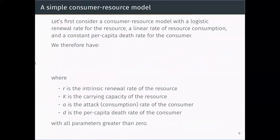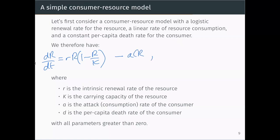So we have our basic structure of this model. We can write down an example: a very simple consumer-resource model where we have a logistic renewal rate, a constant per capita death rate for our consumer, and a linear rate of resource consumption. So dr/dt equals logistic growth minus a linear functional response, and dc/dt equals the efficiency parameter times a linear functional response minus a linear per capita death rate. We're assuming all parameters are greater than zero.